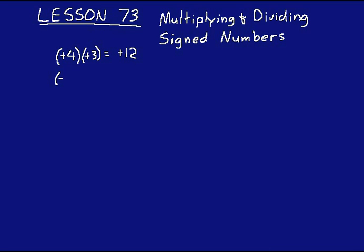What if you had a negative 4 times a negative 3? That also equals a positive 12. That might seem kind of strange, but if you think about your concept of opposites, you have two negative signs there. You can think of this as the opposite of the opposite of 4 times 3. The opposite of the opposite of 12 would be a positive 12. That's why you can do that.